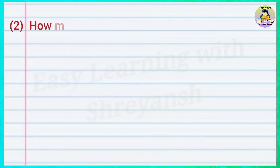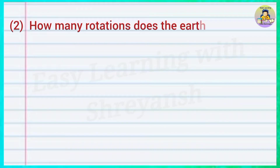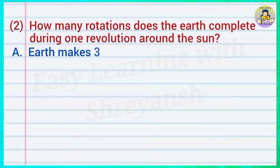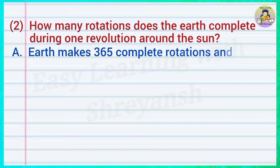How many rotations does the earth complete during one revolution around the Sun? Answer: Earth makes 365 complete rotations and one quarter rotation.